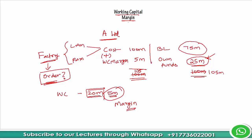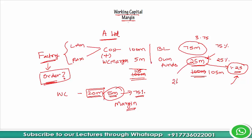So cost is 105 million. On 105 million, the bank will give a loan of 75%, meaning the remaining 25% should come from promoters. It means the bank may give another 3.75 million and they are expected to bring in another 1.25 million. Margin is their obligation — the bank is ready to fund, but only 75%. So they have to find a way to bring in this 1.25 million, in which case own funds will become 26.25 million and bank funds will become 75 plus 3.75, which is 78.75 million, and the total is 105 million. This is how the working capital margin concept operates.